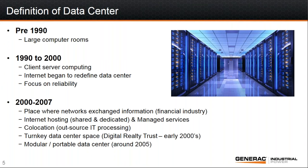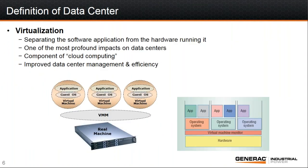Thank you, Laura. So let's jump right in. When we look at the data center market and a little history — pre-1990, it was just large computer rooms. 1990 to 2000, client-server computing kicked in, and the internet really started to redefine what a data center was, with a lot more focus on reliability. Then once we hit 2000 through about 2007, co-location, hosting, and outsourcing of IT roles really started to take off. One of the big changes that made all of this happen was virtualization — basically separating the software from the machine — which fundamentally changed the dynamics of the data center market and cloud computing, allowing the application-to-hardware relationship to be much more fluid.